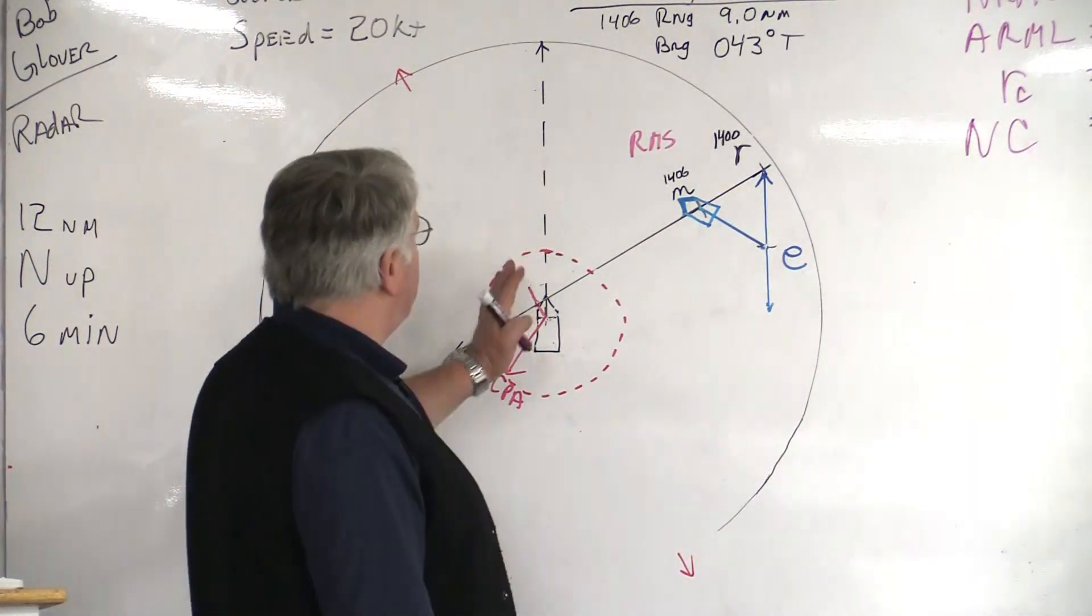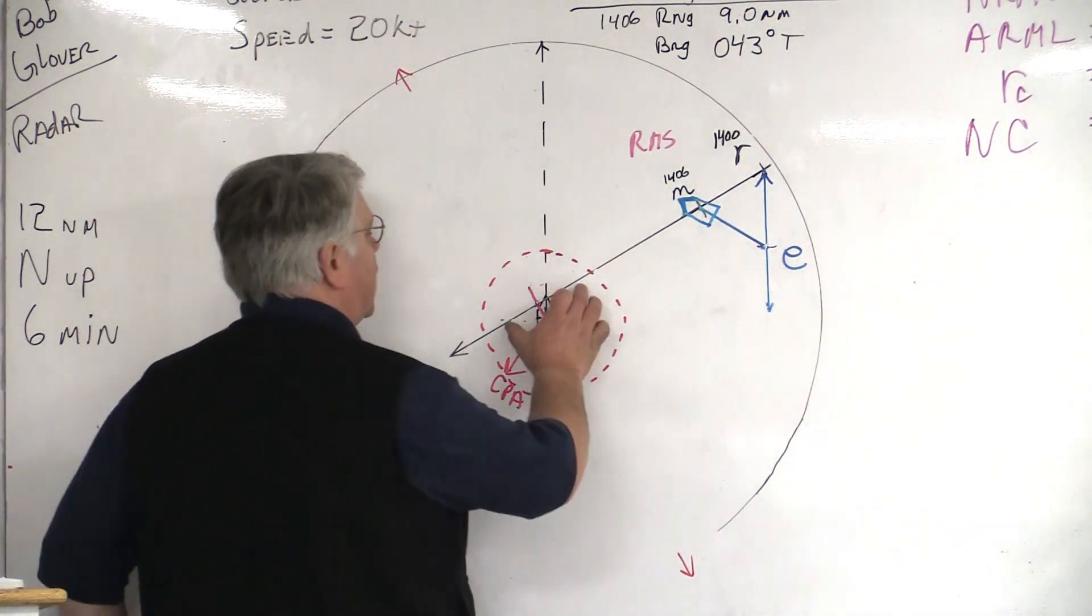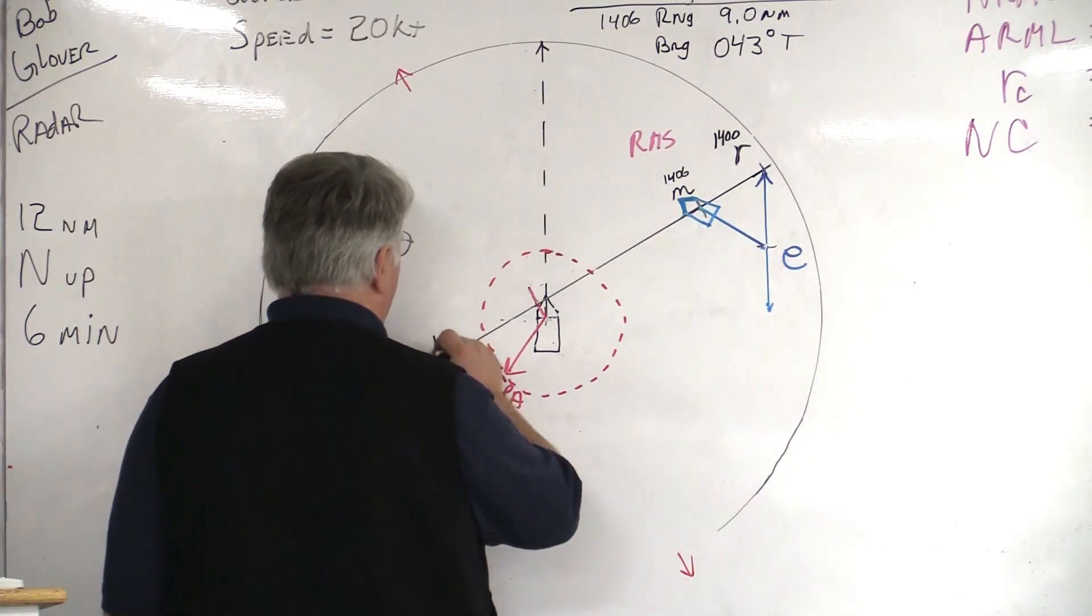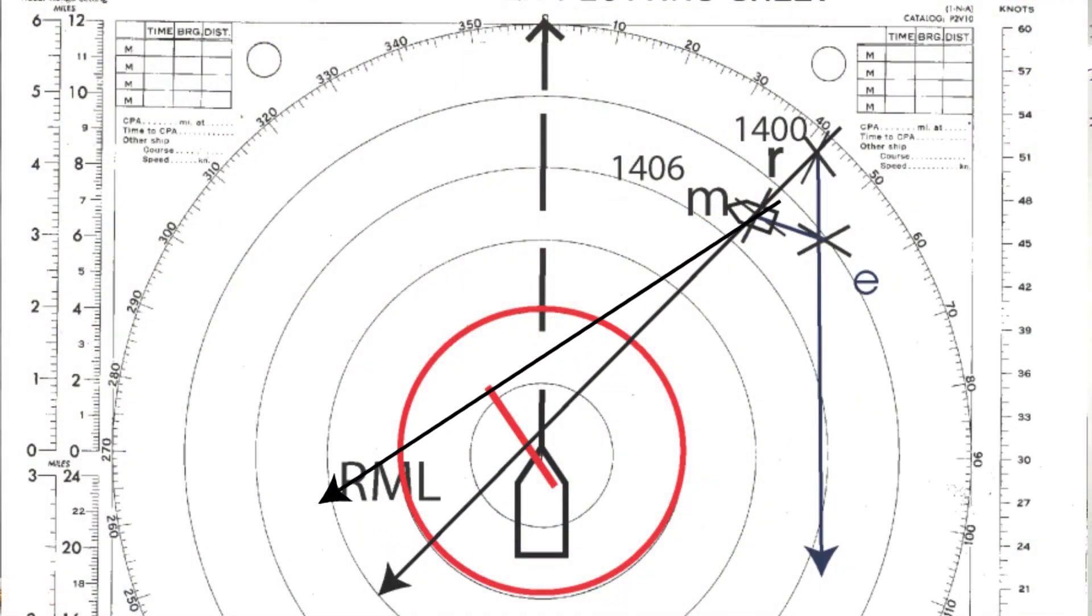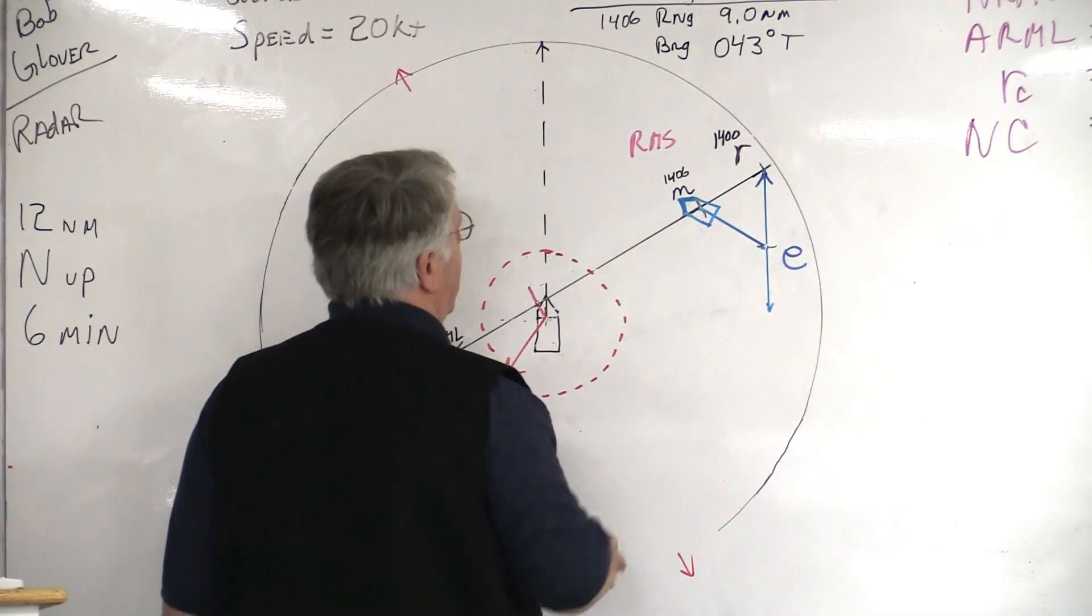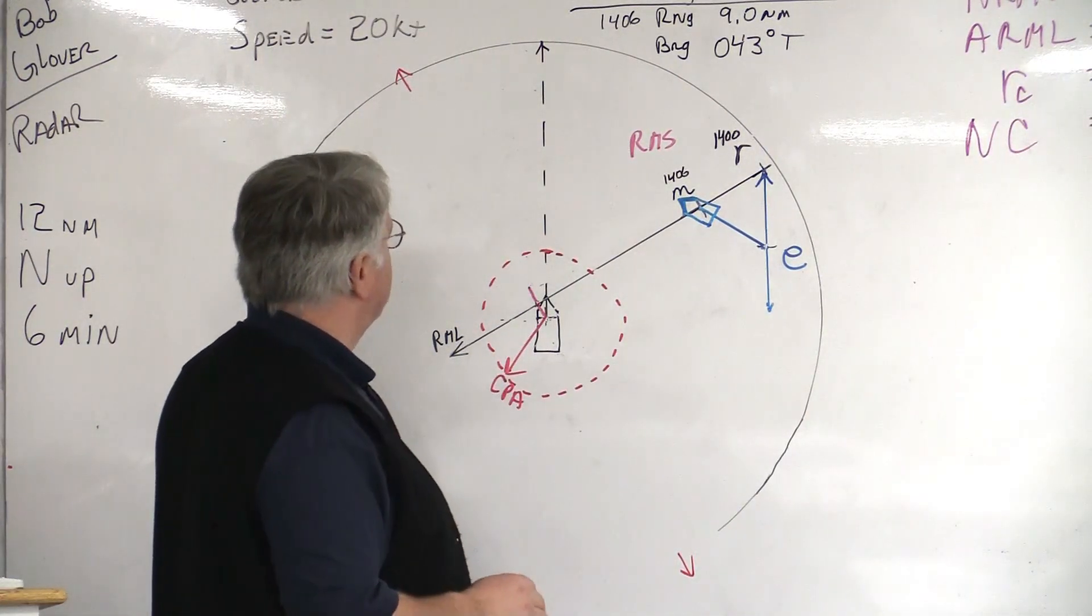In order to figure out how much of a course change we have to make, essentially what's going to happen is we've got to take this relative motion line that we have here, and we've got to push it outside of this circle. Because under its current situation, it's going to be 1.4 nautical miles. So, we want to push it to a two-mile radius outside of our perimeter zone.